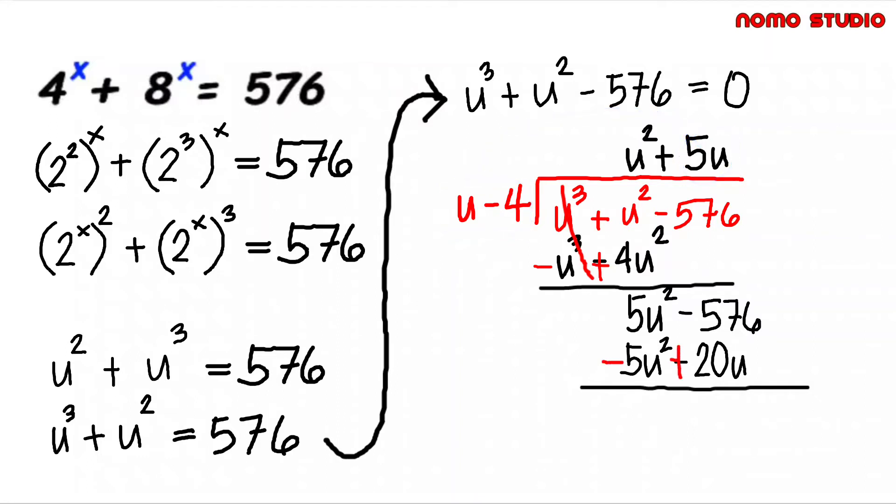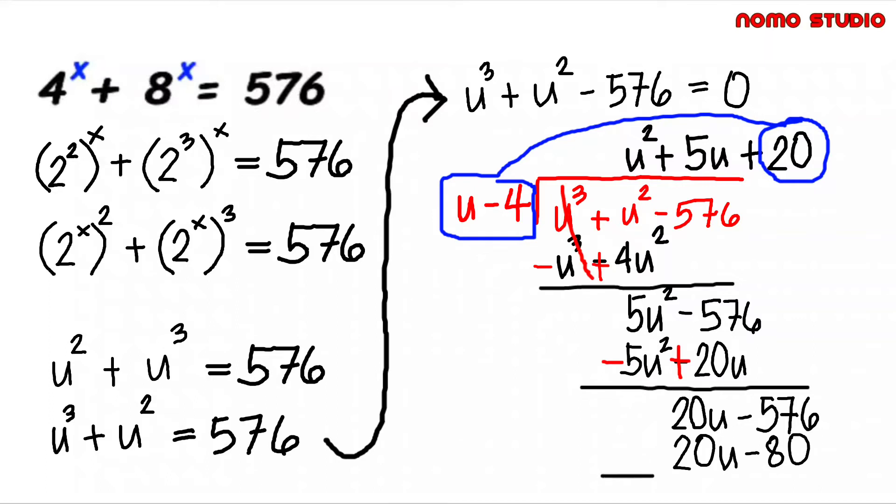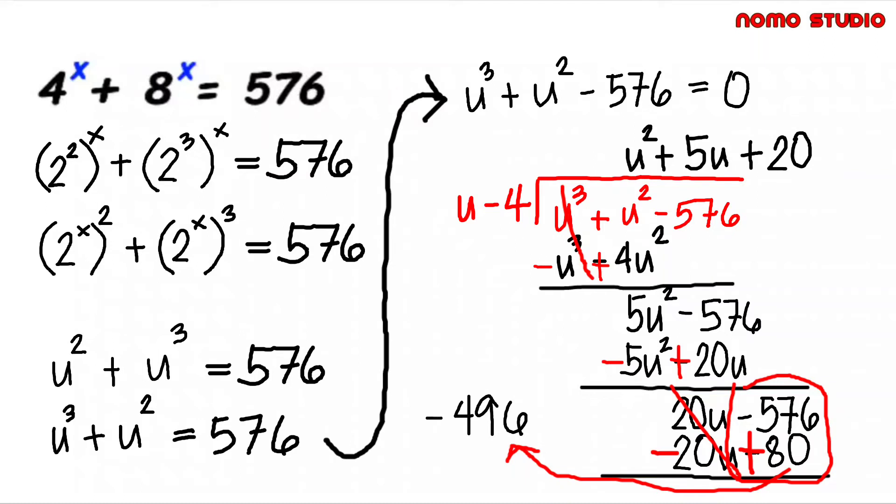Change both signs, so cancel out. We are left with remainder of negative 496. By this, we can say that u minus 4 is not one of the factors of this equation.